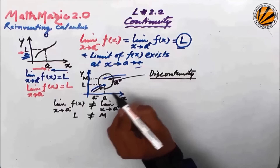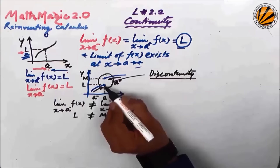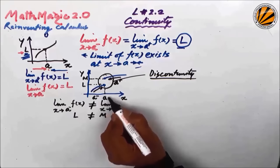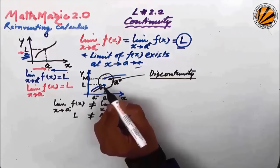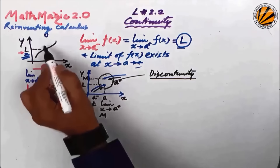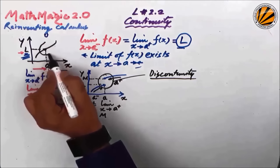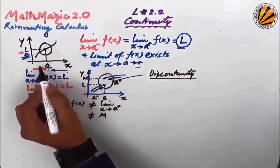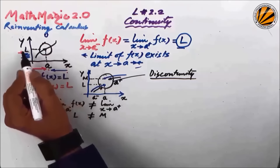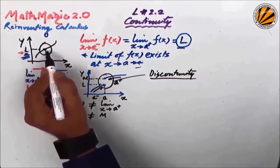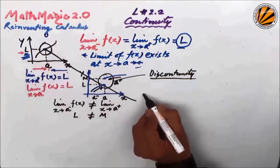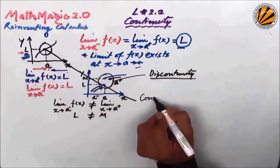Discontinuity means that for a particular input there are two defined outputs. But for continuity, for just one input the output should be defined as exactly one value — that is what makes the function a continuous function.